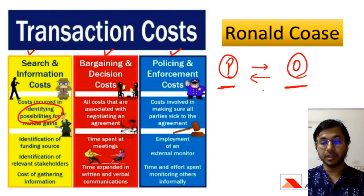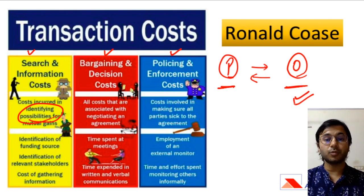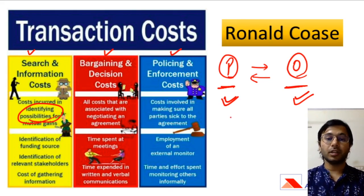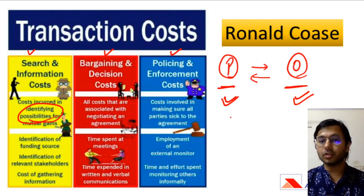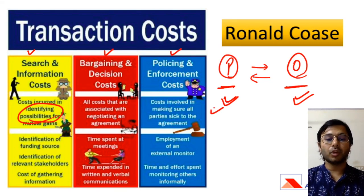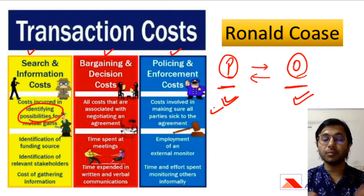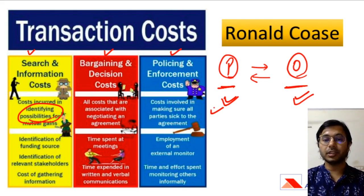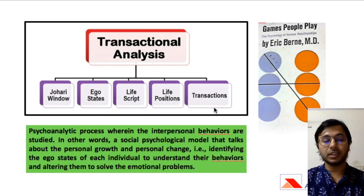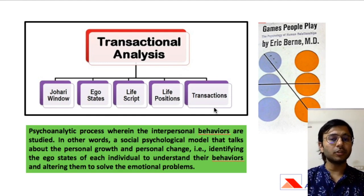The second cost is bargaining and decision costs — costs associated with negotiating an agreement, whether you are outsourcing and negotiating with the opposite party, or making something yourself and bargaining when hiring people or acquiring raw materials. Third are policing and enforcement costs, which ensure that all parties stick to the agreement, whether producing or outsourcing. You compare these costs across both options and come to a conclusion. Transaction cost theory is not connected with the case at all, so the second option is also eliminated.